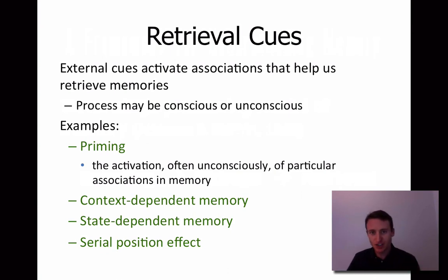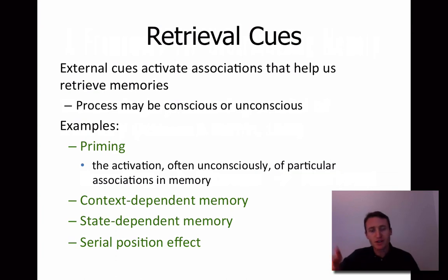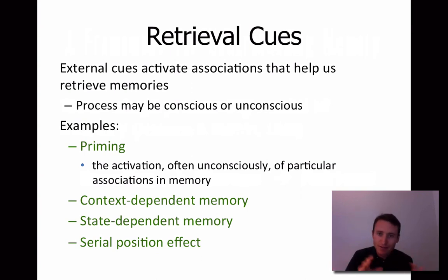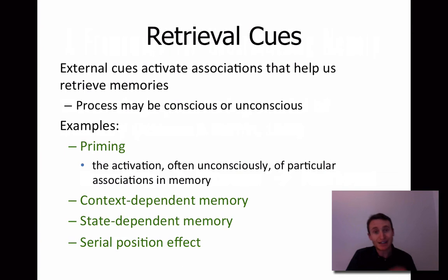The serial position effect suggests that the order in which information is presented changes the likelihood of retrieving it. Specifically, in a list of information, we are better able to retrieve information that is presented first and presented last. The information in the middle kind of gets lost — it's not as easy to retrieve. The information presented first benefits from rehearsal — we get to think about it more. The information presented last benefits from a recency effect — it's the most fresh in our minds. Everything in the middle gets lost.